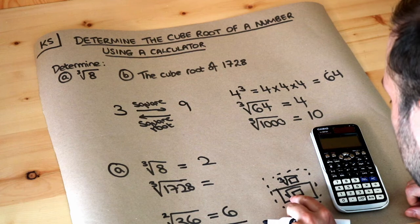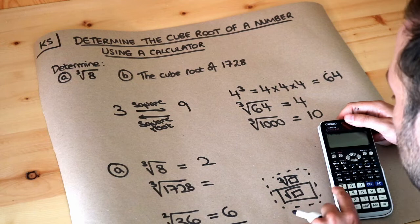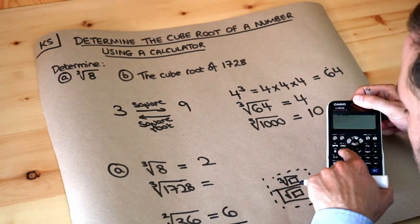Now if you want to get the functionality for the gold text above a button, depending on what calculator you have, you use the shift key, which is in gold, in order to get the gold stuff above the button.